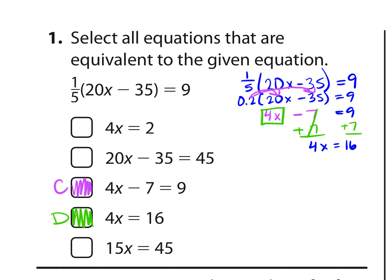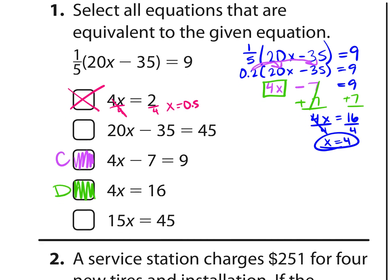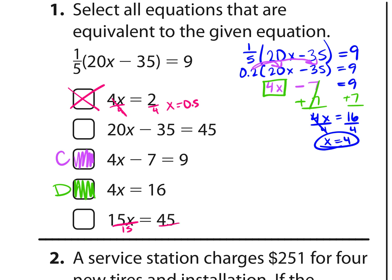I could finish solving. I'm going to divide both sides by 4 and get that x is equal to 4. So the first choice is not true. Let's skip the second for a moment. But on this last choice, I could divide both sides by 15 and I get that x is equal to 3. So that one's not true.